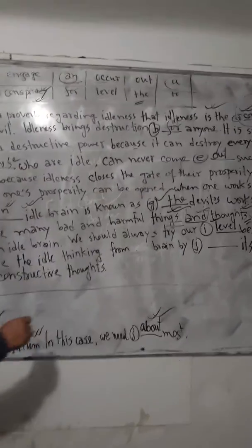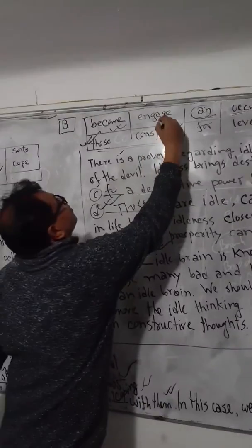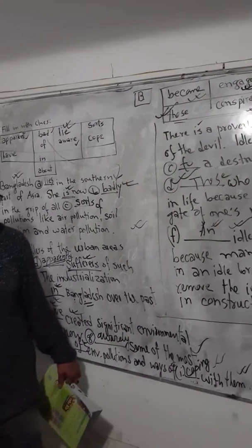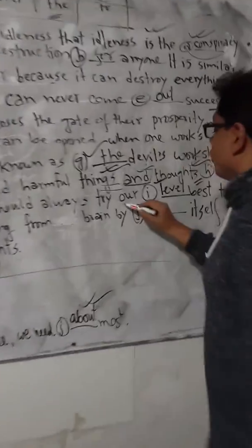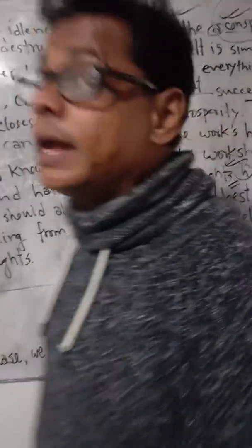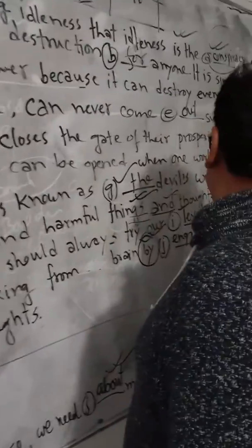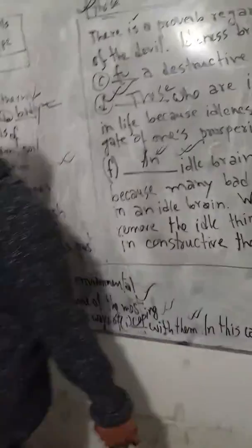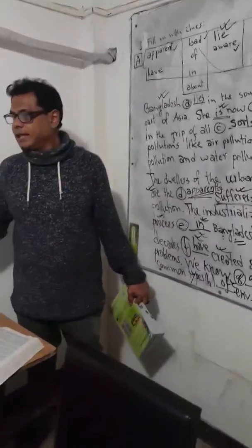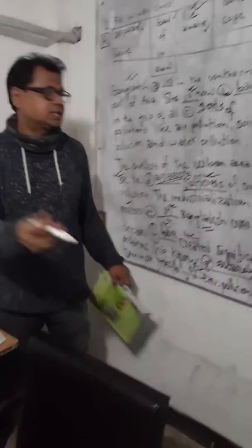The last gap: 'by dash itself.' Whenever you use the preposition 'by,' the following verb takes the '-ing' form, so the answer is 'by engaging.' You have successfully filled in all the gaps. I think you have understood the lesson well, so thank you very much — well done!